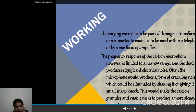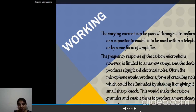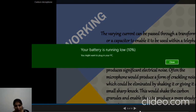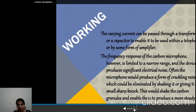The carbon microphone was used in early telephone systems — the handheld devices we had at home. The frequency response of the carbon microphone was not very wide; it was a narrow range, and the device produced electrical noise. Carbon microphones often produce a crackling noise which could be eliminated by shaking or giving a small sharp knock. That noise we used to hear during telephone calls, and we would shake the handset — that was due to the carbon granules.